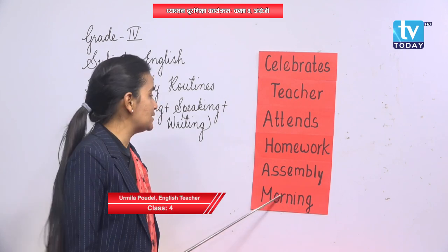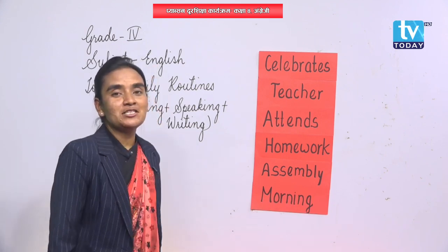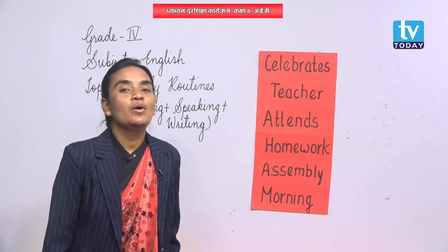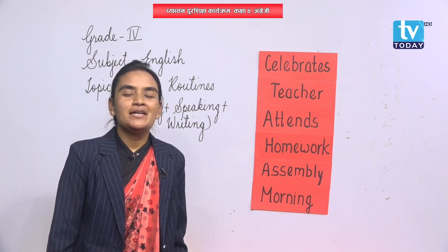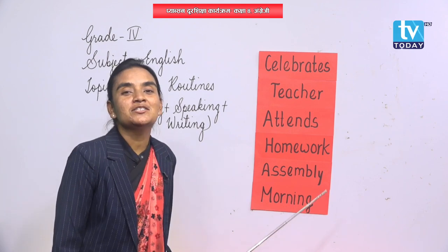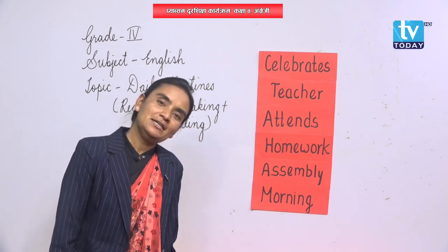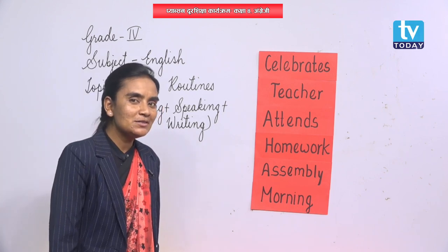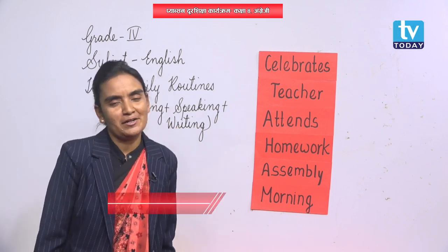Now, children, the next one is 'morning.' The correct pronunciation of this word along with the spelling is M-O-R-N-I-N-G, morning. Morning means the first phase of our day. The similar meaning of morning is D-A-W-N, dawn. Now I want to show you the next one. We'll be going to the next exercise for finding other more words.